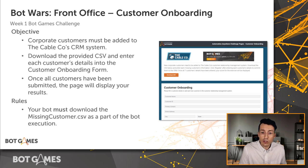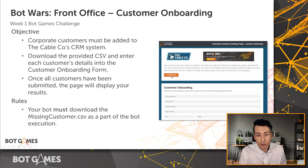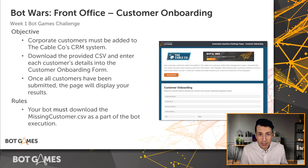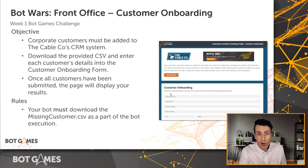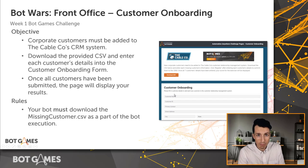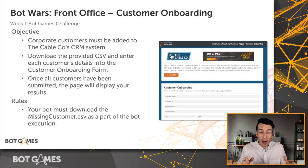What we're going to need to do is download the CSV, which is titled missing customers dot CSV. We want to loop through that CSV to enter all of the missing customer details into this customer onboarding form. Once all seven customers have been successfully added to the form, you can hit submit and a modal will pop up that shows you your Bot Wars challenge page score.